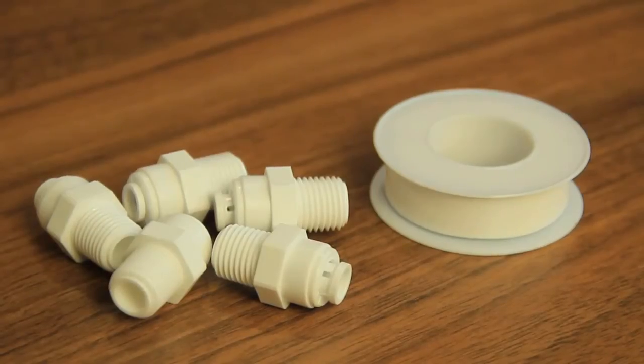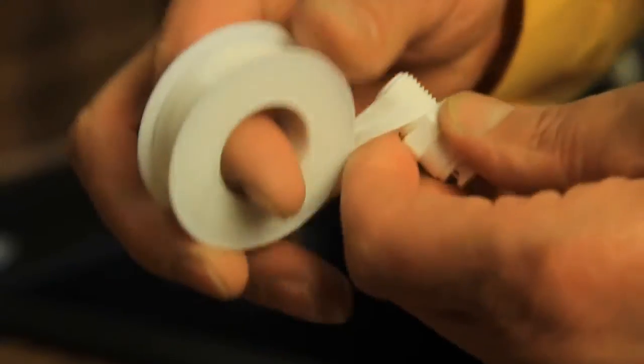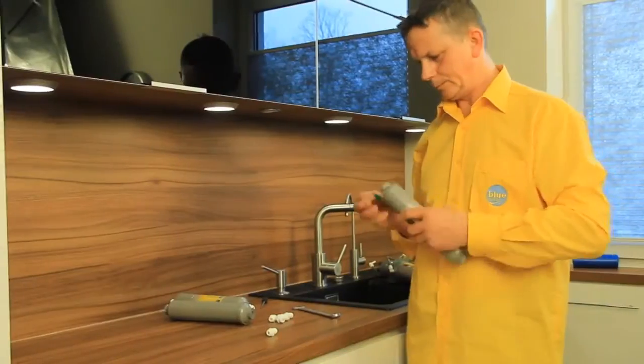Wrap Teflon tape around the connector's thread and plug the connectors into the new cartridges. For better isolation, wrap Teflon tape around them exactly six times.